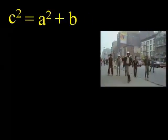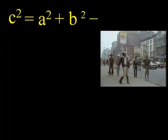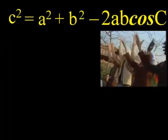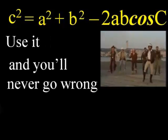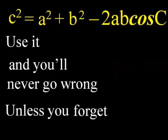C squared equals a squared plus b squared minus 2ab cosine C. Use it and you'll never go wrong, unless you forget this cool song.